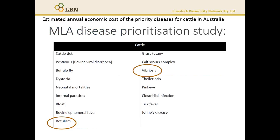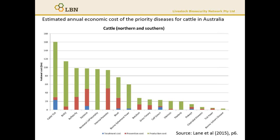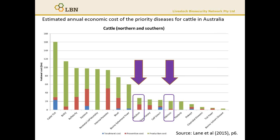Looking at information from the most recent MLA study into disease prioritisation for cattle in Australia, you'll see two diseases — botulism and Vibriosis — both covered as being diseases of paramount concern. Both have an associated prevention cost and production cost. In Vibriosis in particular, the prevention cost — the cost of vaccination and biosecurity — is very low when you compare it with the production cost or the losses associated with the disease. It is one preventable disease where cost-benefit analysis indicates that vaccination is very beneficial.